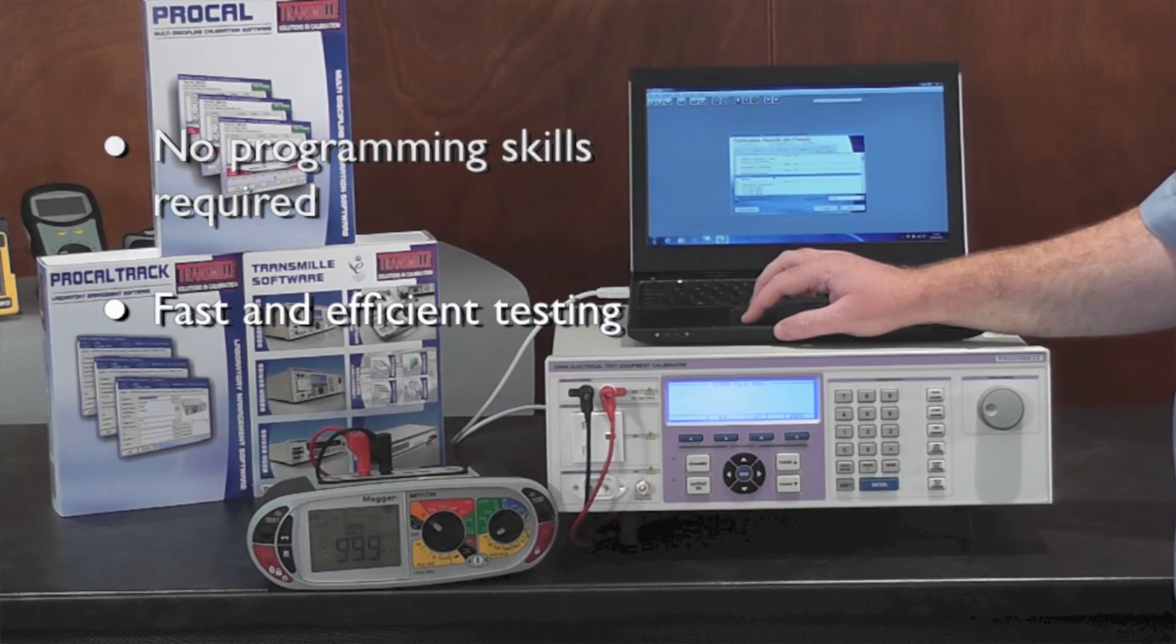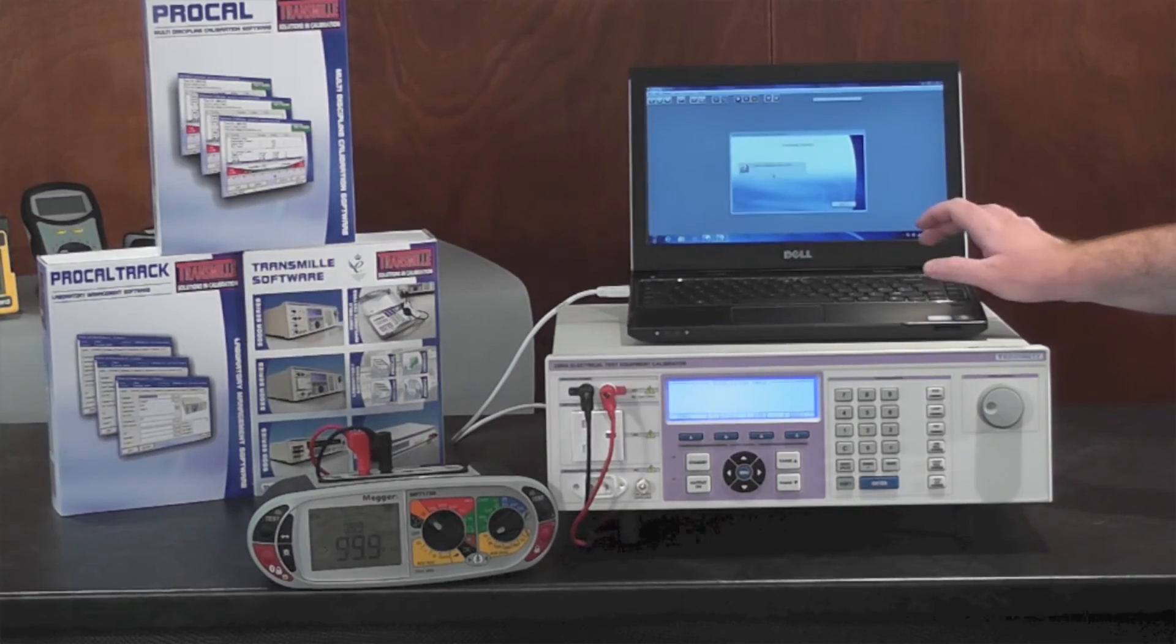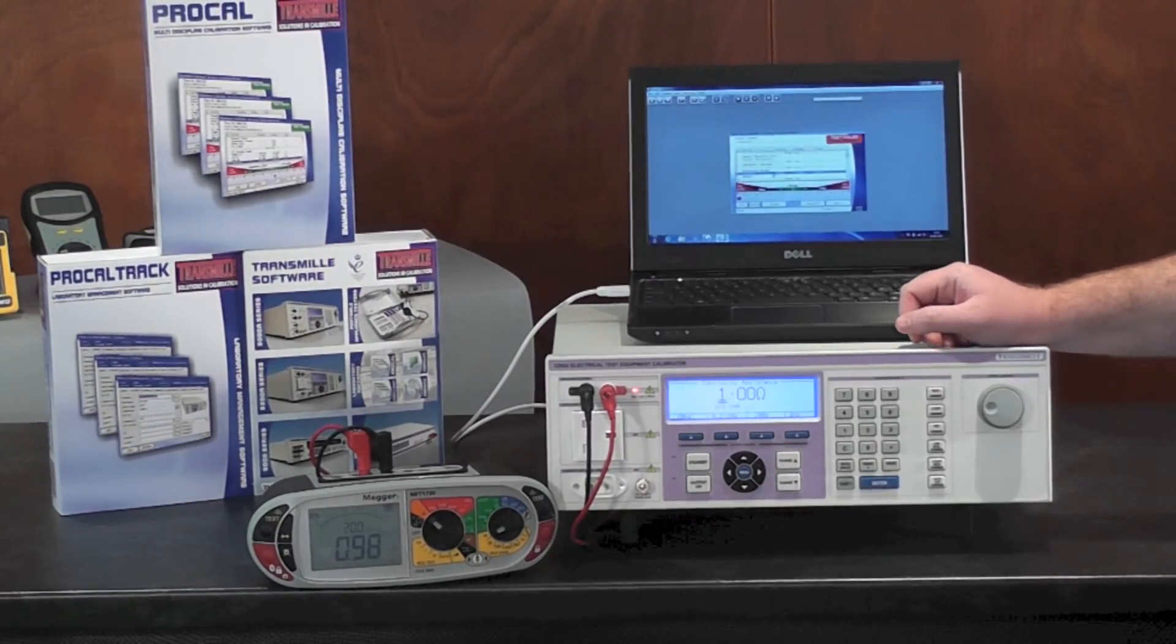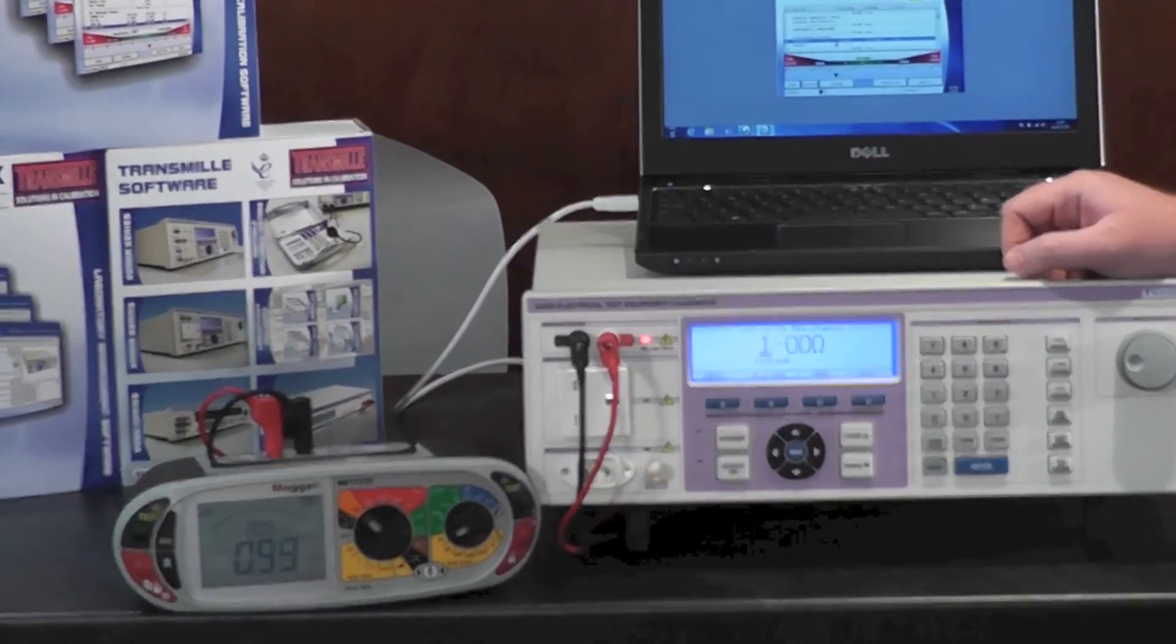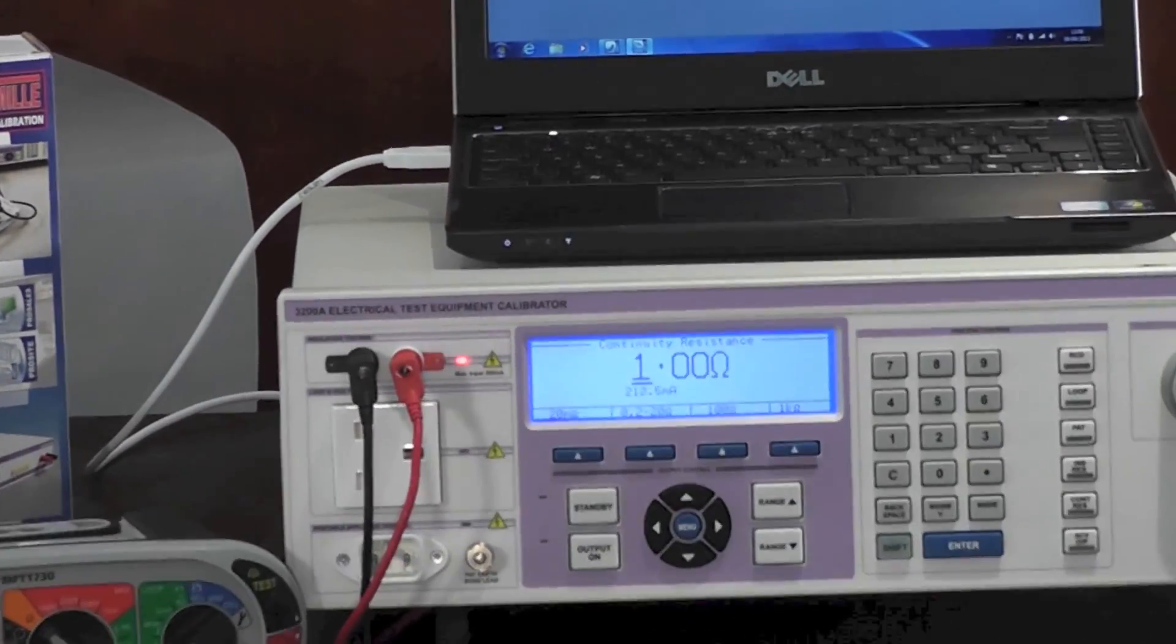For example, measuring continuity current from this tester. I press next. It automatically sets the 3200 to the correct range and begins to read back the continuity current measured from the tester.